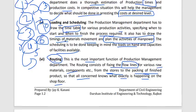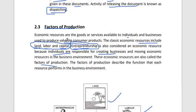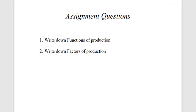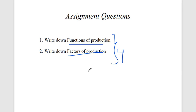So the two main topics covered in production are: the meaning of production with its functions — material, method, machine, estimating, scheduling, routing, and dispatching — and the factors affecting production: land, labor, capital, and entrepreneurship. Your assignment is to write down the functions of production and factors of production and upload it. Today's lecture is completed.